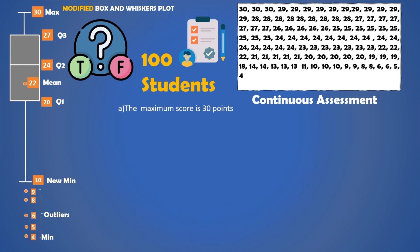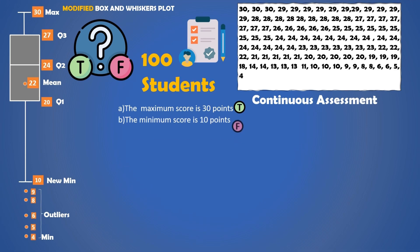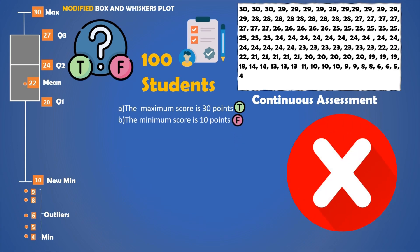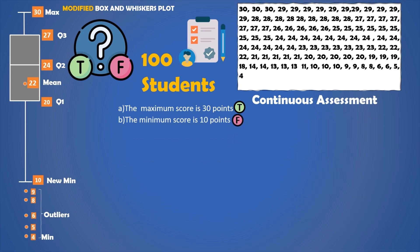The maximum score is 30 points — yes, this is true. The minimum score is 10 points — well, this is false. The new minimum is 10, but the actual minimum score is 4, and we can see that also from the data set.